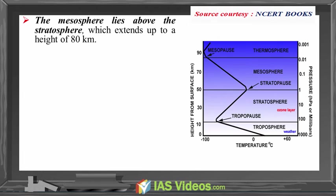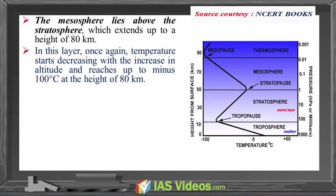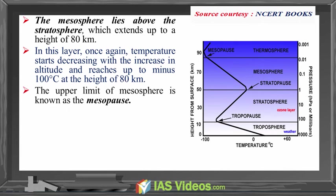The mesosphere lies above the stratosphere and extends up to a height of 80 kilometres. In this layer, temperature starts decreasing with increasing altitude and reaches up to minus 100°C at the height of 80 kilometres. The upper limit of the mesosphere is known as the mesopause.